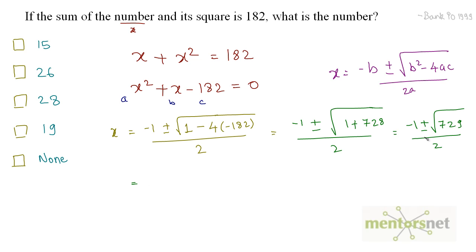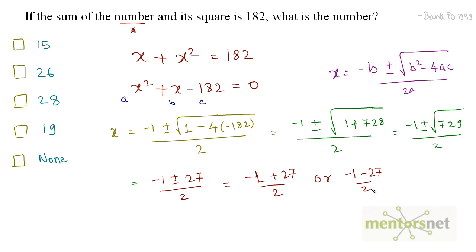Taking the square root of 729 gives 27. So x = (-1 ± 27) / 2, which gives either (-1 + 27)/2 = 26/2 = 13, or (-1 - 27)/2 = -28/2 = -14. We ignore the negative answer. However, since 13 is not among the given options, the right answer is none of these.